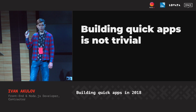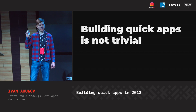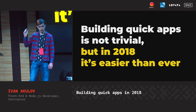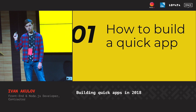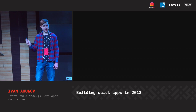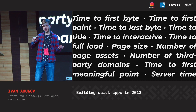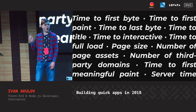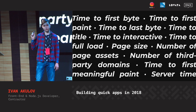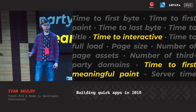Building quick apps is not trivial, but in 2018 it's easier than ever. Let's see why. You want to build a quick app, but what to focus on? There are lots of metrics and lots of things to track — page size, server time, time to first byte. In fact, the two most important metrics to track are time to first meaningful paint and time to interactive. So if you want to build a quick app, you need to track these metrics.